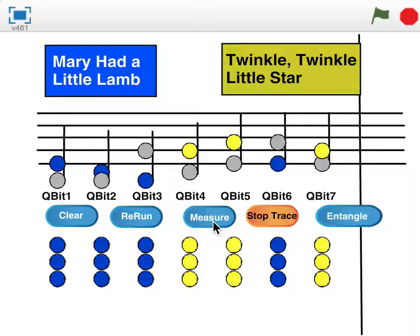The third concept is that quantum computations manipulate these probabilities. It's not that useful to have a bunch of bits that have a 50-50 probability of being a one or a zero — we might as well just flip coins. In order to do useful computation, we don't want that 50% probability at each bit. Instead, we manipulate those probabilities through quantum operations.